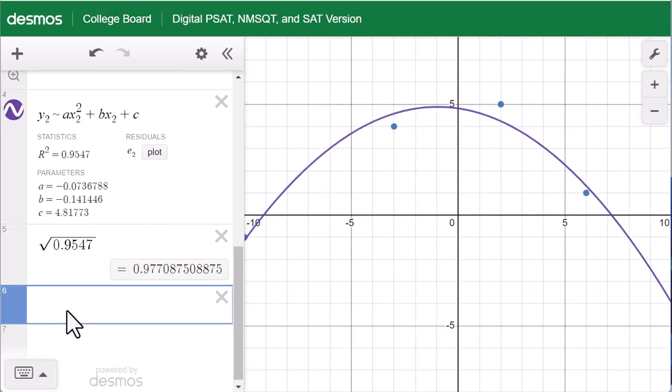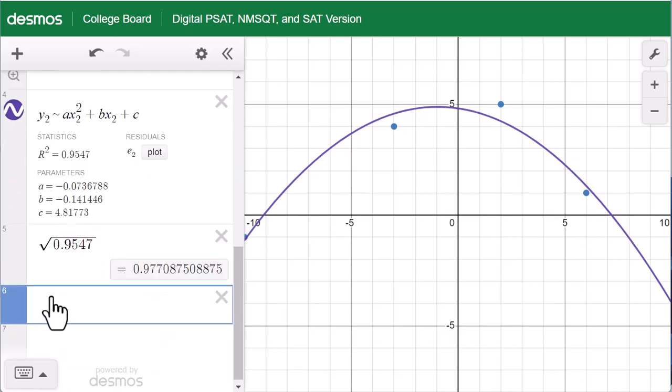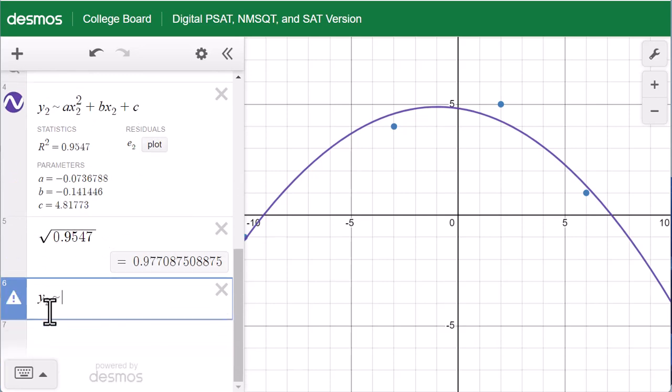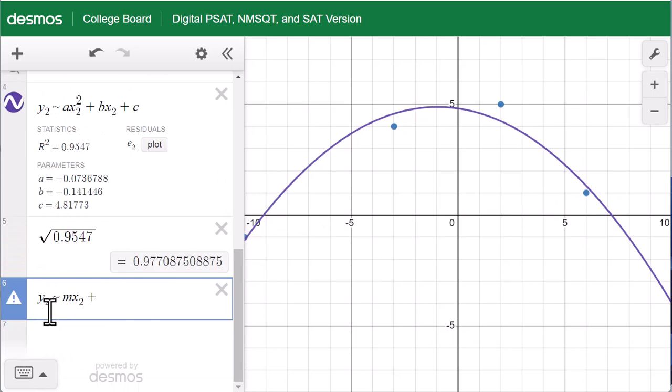You can also check which regression line is the best fit. For this table, we can check linear regression line. y2 is the approximate to mx2 plus b.